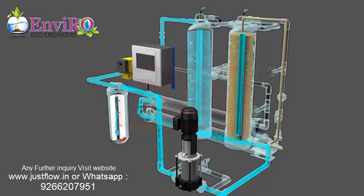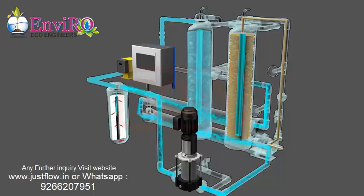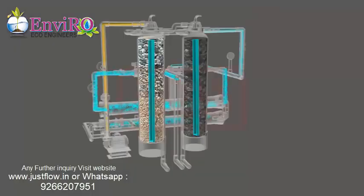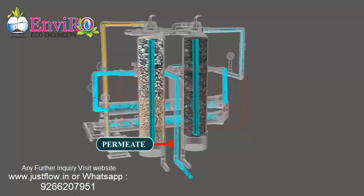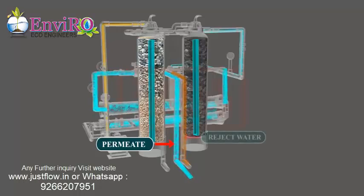Water passes through the membranes while most dissolved solids do not pass through. This pure water, achieved through reverse osmosis, is called permeate or product water, and is used for various processes or stored in a storage tank. Part of the reject water is either recycled or reused.